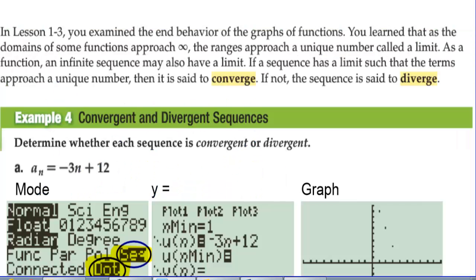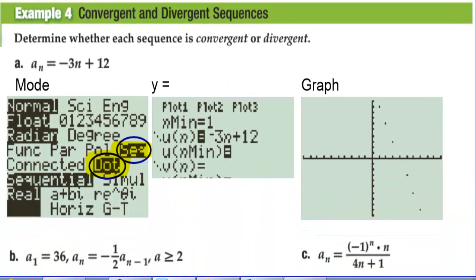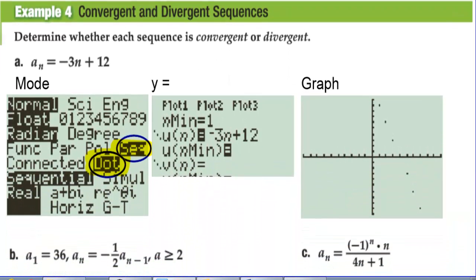In lesson 1-3, you examined the end behavior of graphs of functions and learned that as the domain approaches infinity, the range may approach a unique number called a limit. Similarly, an infinite sequence may also have a limit. If the terms approach a unique number, the sequence is said to converge. If not — for instance, if it shoots off to infinity — the sequence is said to diverge.